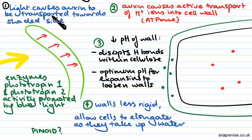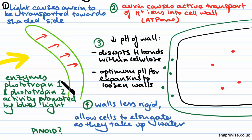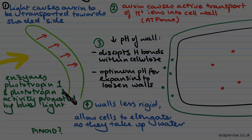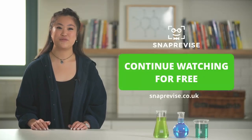The actual mechanism of auxin transport is slightly more contentious. It has been found that the enzymes phototropin 1 and phototropin 2 — their activity is promoted or stimulated by blue light, which is a large component of white light and sunlight in general.